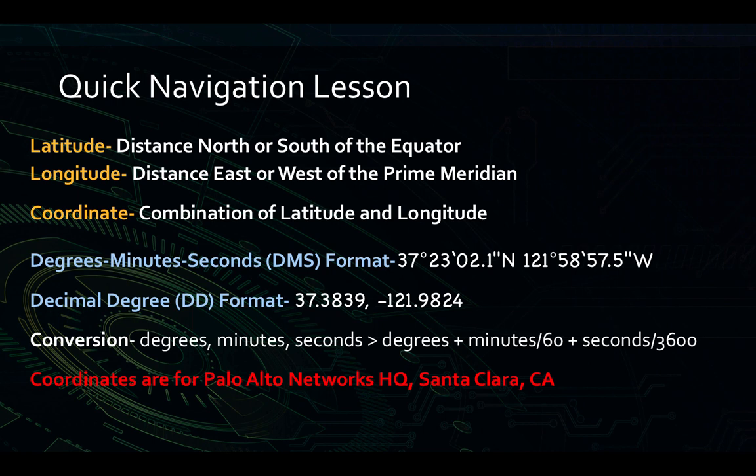The decimal degree format is a bit different. You'll notice that we don't specify a direction, and that there's a negative number for the longitude. The actual coordinate is also different than the DMS format, even though it's the same location. That's because we do a conversion from DMS to DD format by dividing the minutes by 60, the seconds by 3600, and adding them together. Many computer systems use the decimal degree format for geolocation, not the DMS format. This includes Palo Alto Networks firewalls.